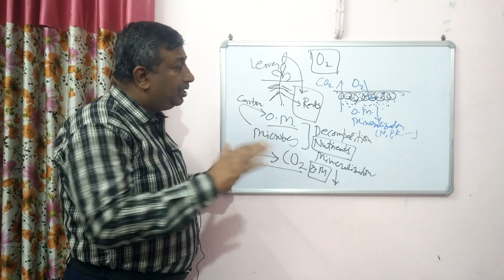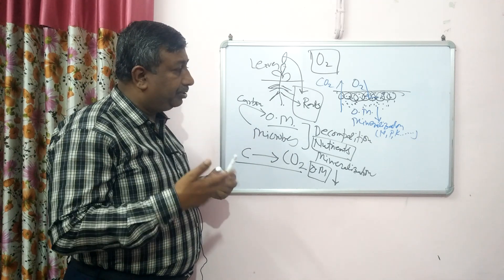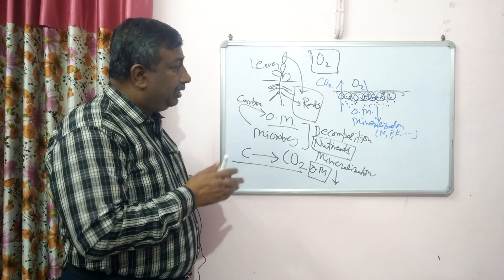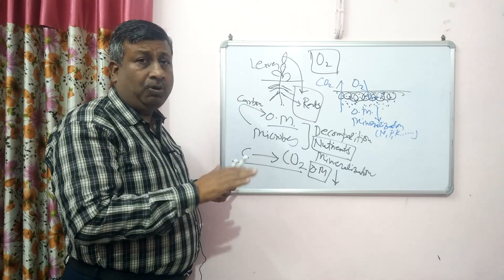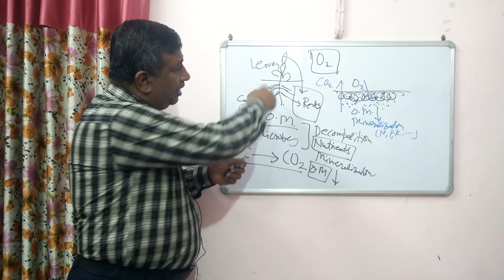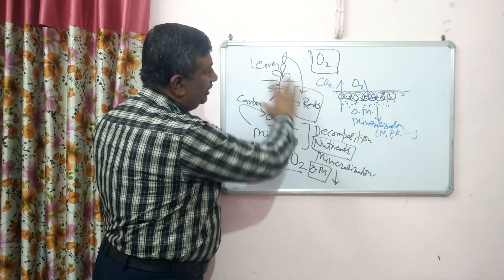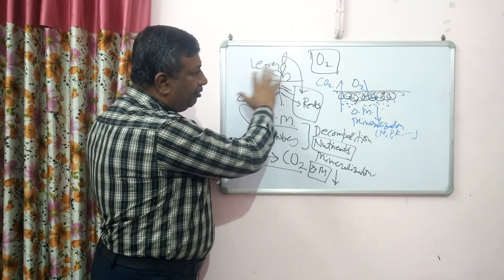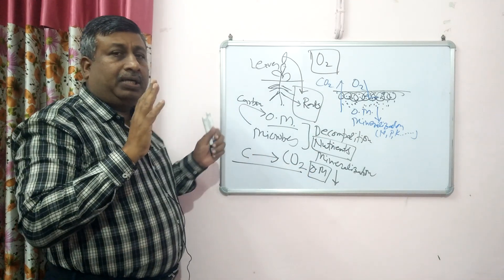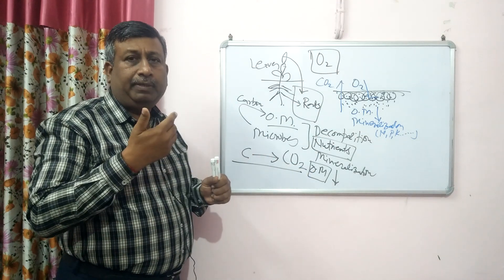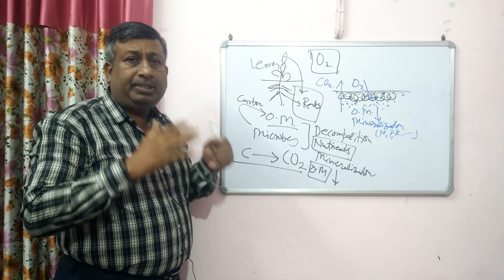What will happen in conventional tillage? The organic matter content will decrease, carbon as CO2 will be lost, and whatever organic matter was contributed naturally by plants — through roots and leaves — is now reduced by tillage. This is the reason that in conventional tillage system, when we go for harrow or rotavator, organic matter content decreases.